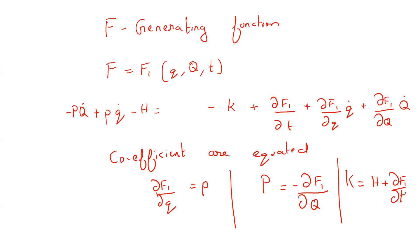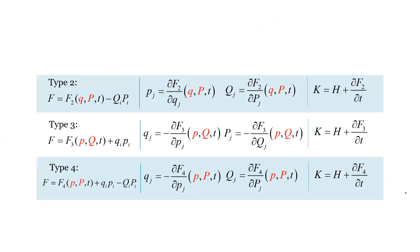These are our equations by which you can generate the transformations required to go to the new system of coordinates. This is what is called the canonical transformation. There are different kinds of generating functions — this is type F1 — and there are other types of generating functions from which you can generate other kinds of transformations. So this is about canonical transformations.